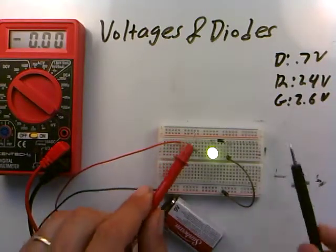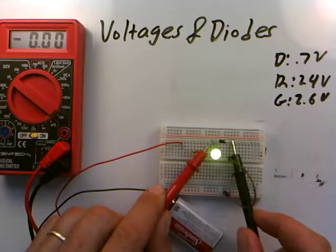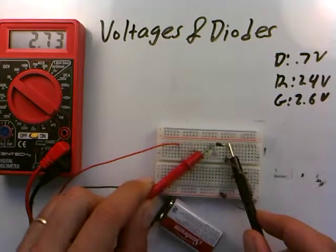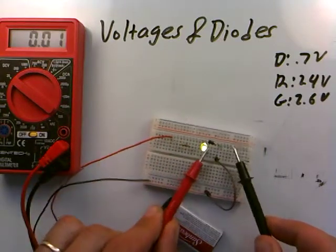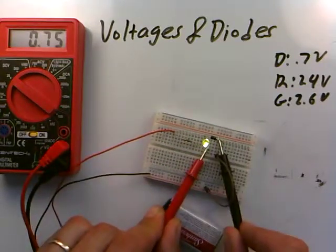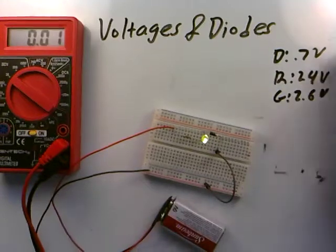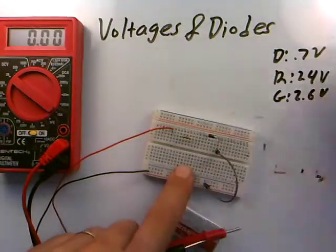And guess what the voltage is going to be across the diode? Let's see if we can get the leads in there. Here we go, here and here. 0.7 across the diode once again. So the diode's holding up at 0.7. Green LED, 2.6.